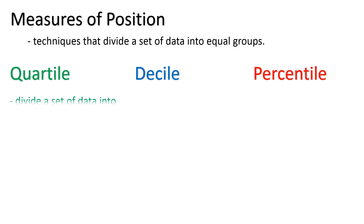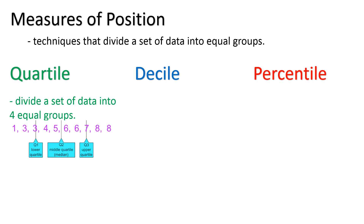Quartile divides the set of data into four equal groups. Just like this figure, this is how a quartile looks like — dividing a set of data into four equal groups. We have the first group, then the second group, the third group, and the fourth group.